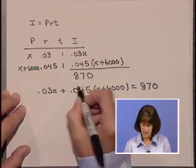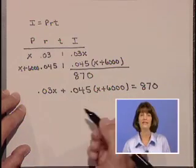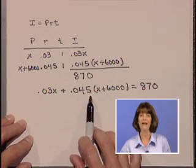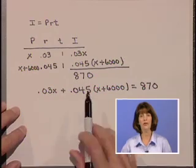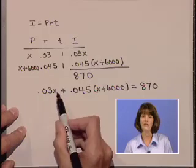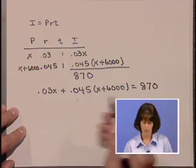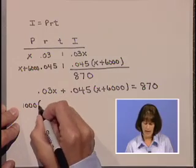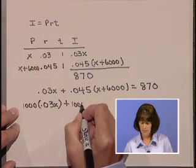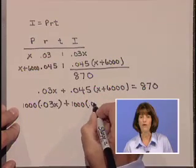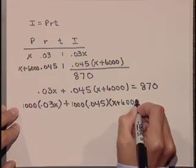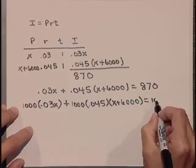This one has decimals in it, so let's try to multiply through by something that will get rid of those decimals. As we look through here, the .045 has three decimal places, and so let's multiply through by 1,000 to move that decimal point over and make that a whole number. So let's take 1,000 times each term in this equation: 1,000 times .03X plus 1,000 times .045 times (X + 6,000) is equal to, and don't forget this side,